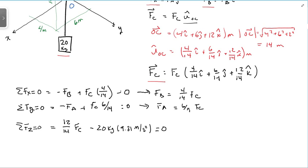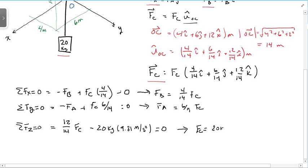So if I take the third one, I solve that for FC. And what I get is FC is equal to 20 kilograms times 9.81 meters per second squared times 14 over 12. And that gives me 228.9 kilonewtons. And what I can do then is take that and plug that back into these two equations and get FA and FB.